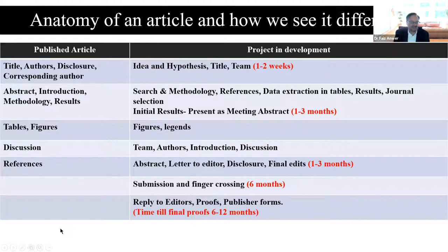I want to explain the anatomy of an article — how someone who just picks up a journal reads it versus how I look at it when trying to help someone publish. On the left-hand side you have a published article: there's a title, authors, disclosure information, corresponding author with address and email, then abstract, introduction, methodology, results in tables and figures, discussion over four or five paragraphs, and then references.